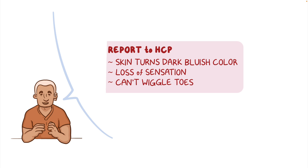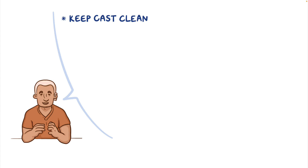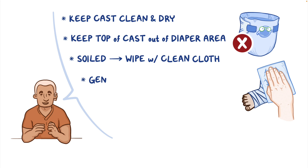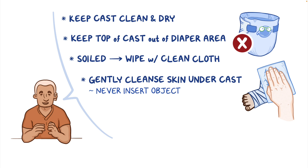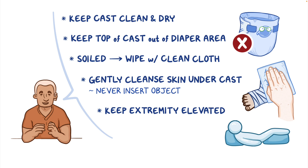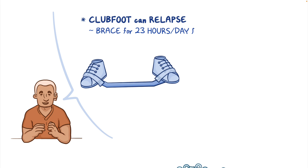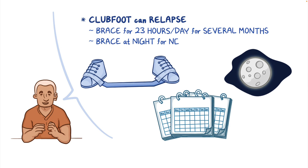Talk to them about how to care for their child's cast. Teach them to keep the cast clean and dry. Since the cast extends all the way up to the groin area, teach them to keep the top of the cast out of the diaper area. If it becomes soiled, they can wipe it with a clean cloth. They should also gently cleanse the skin under the cast when soiled, but stress that they should never insert any object underneath the cast. When their child is resting on their back, advise them to keep the extremity elevated on pillows to help prevent swelling and take pressure off the heel. Finally, remind them that clubfoot can relapse even after correction with casting, and that their child will need to wear a brace for 23 hours each day for several months, and then at night for the next few years.